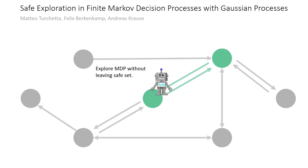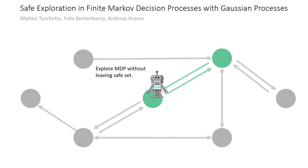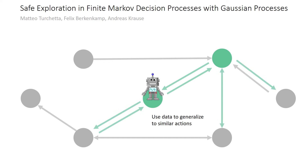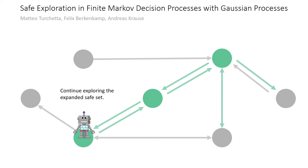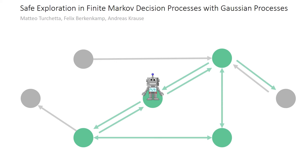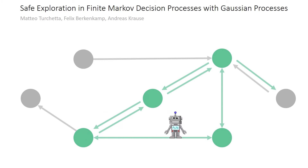As the robot moves among these safe states, it can use measurement data together with a Gaussian process model of the safety feature to determine whether similar transitions are safe. Through this knowledge, the set of safe states expands, opening up new possibilities for exploration. As the robot continues this process of exploring interesting safe states, it gains more and more information until eventually the full reachable safe set is determined.